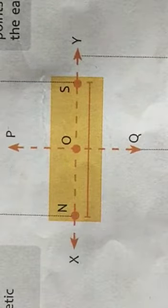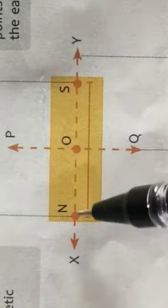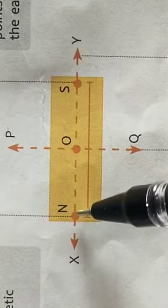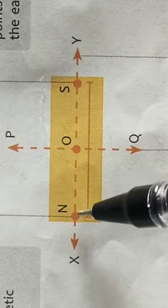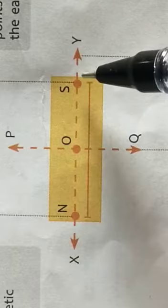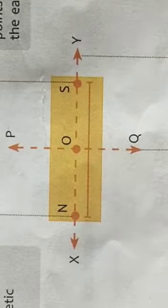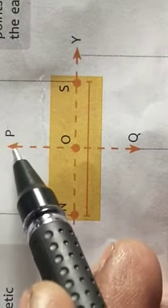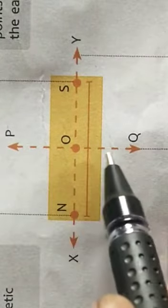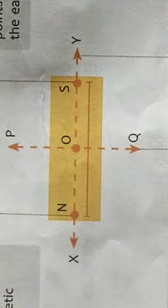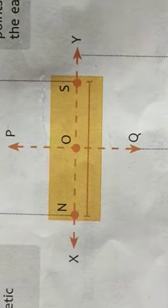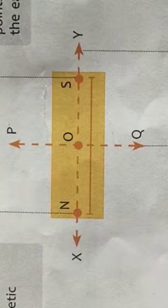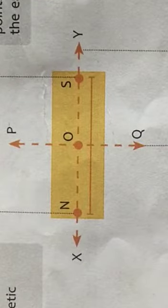The imaginary line PQ which bisects the effective length of the magnet — that is, the distance between the north pole and the south pole — is called the magnetic equator.